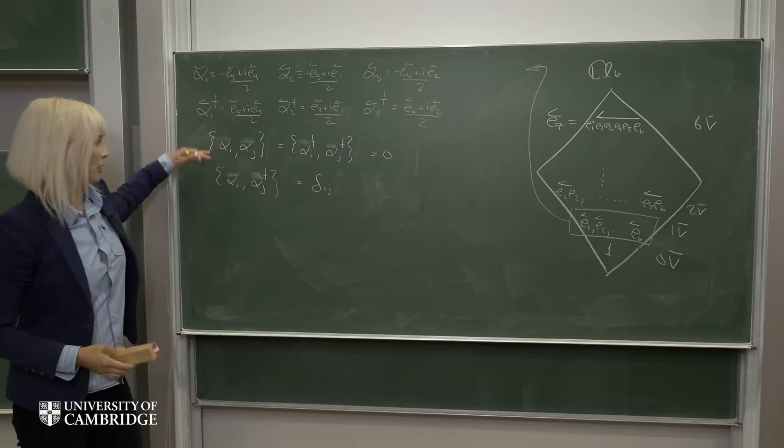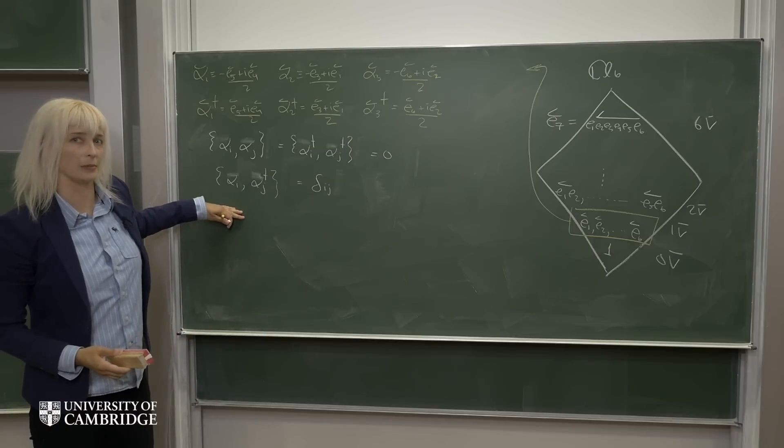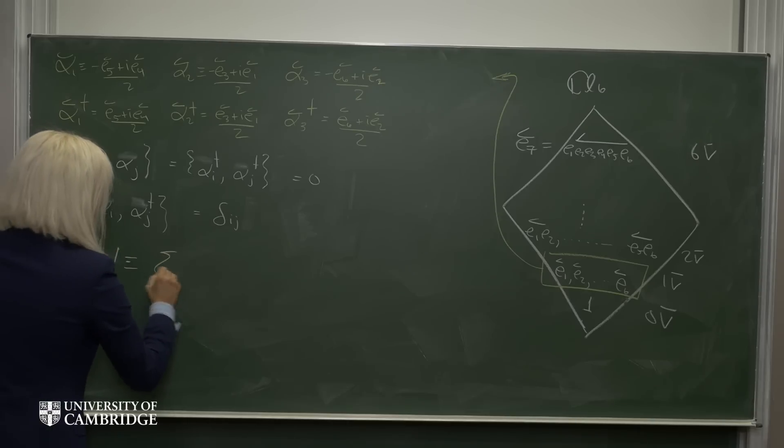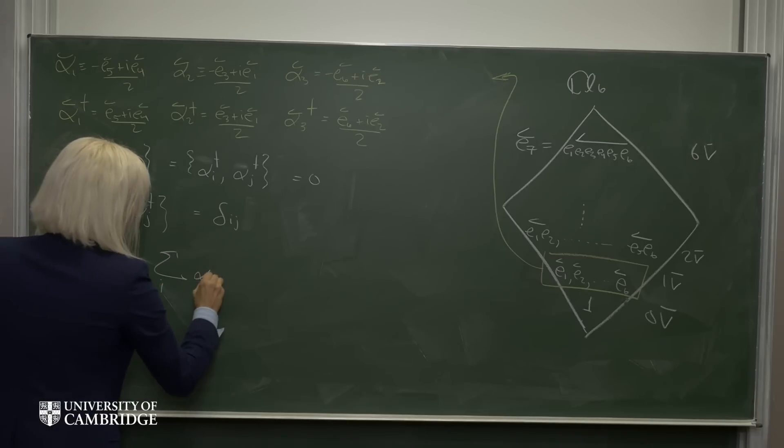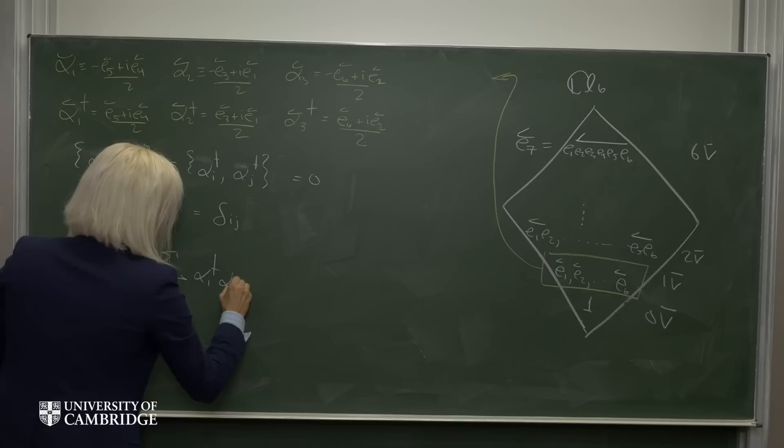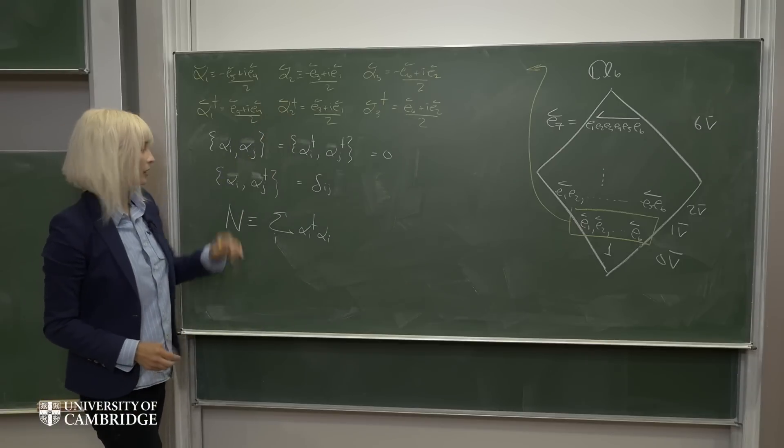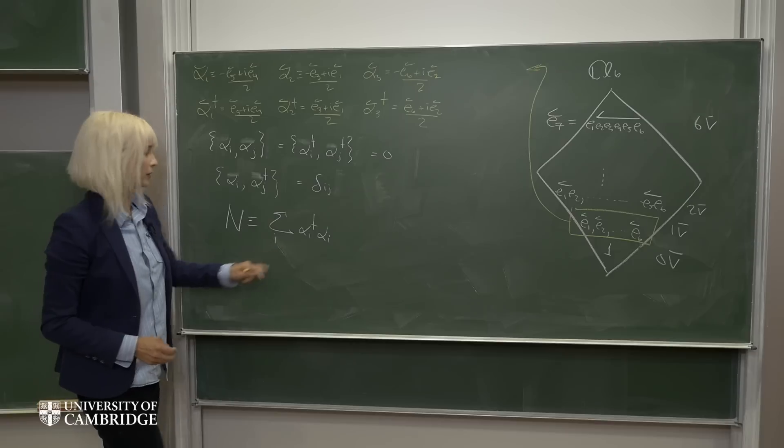So in other words, our equations will just be in terms of the operators from here on in. So now we can write down a number operator in the usual way. And here we've got three alphas and three alpha daggers. So this sum is going to run from one to three.